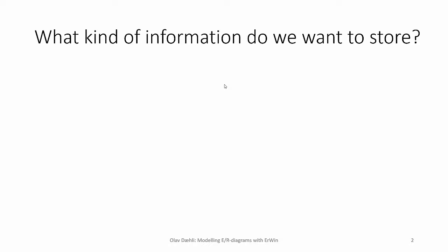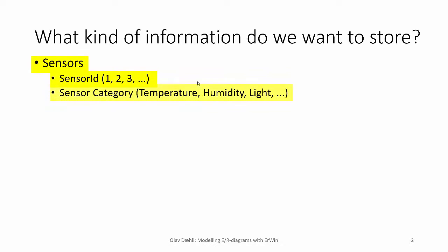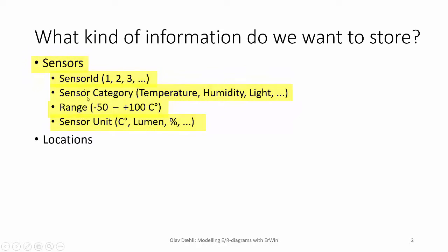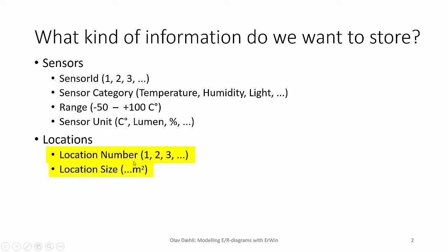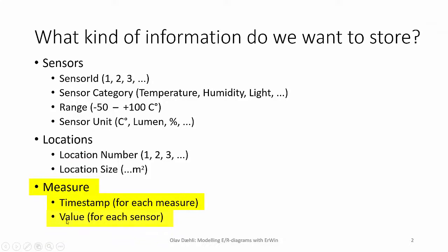First we will summarize what kind of data we need to store in our database. We need some data about the sensors — for instance, a sensor ID to identify each sensor. We also need to categorize the sensors to tell if they are temperature, humidity, light, etc., and we can store something about their range. Maybe we want to store the unit they use. Sensors can be placed at different locations, so we want to store something about the locations, and we need a location number. We can use 1, 2, 3 and so on. The locations also differed in size, so maybe we want to store something about the size. At certain timestamps we want to measure different values, so we need to store a timestamp and the values that are measured.